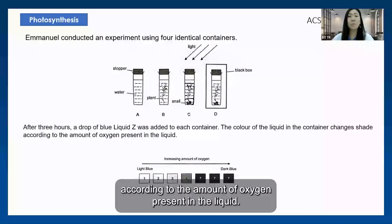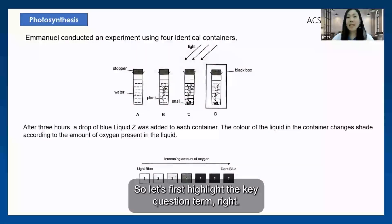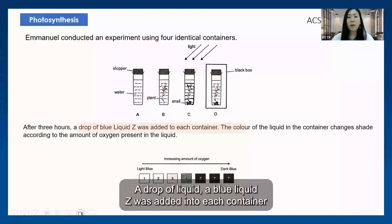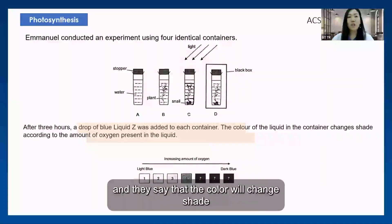The color of the liquid in the container changes shade according to the amount of oxygen present in the liquid. Let's first highlight the key question term: a drop of blue liquid Z was added into each container, and the color will change shade according to the amount of oxygen present.